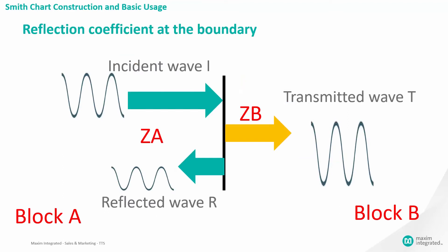Let's see what happens at the interface between ZA and ZB. The incident wave labeled I from ZA to ZB will have a portion transmitted labeled T and a portion reflected labeled R.